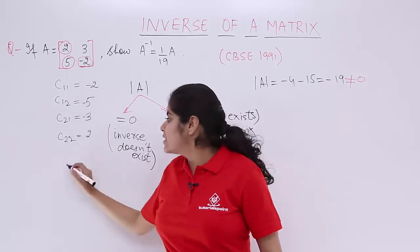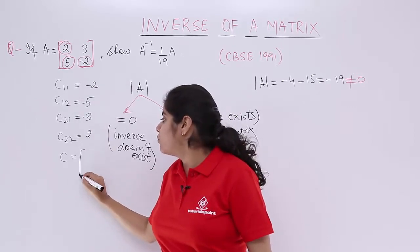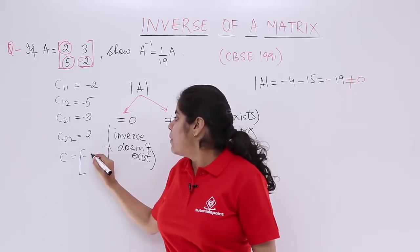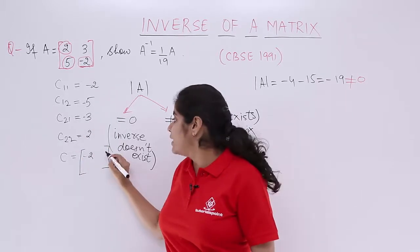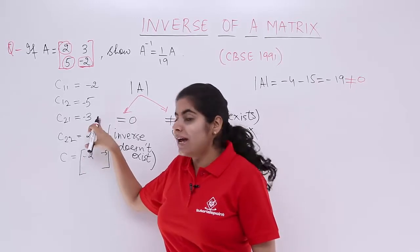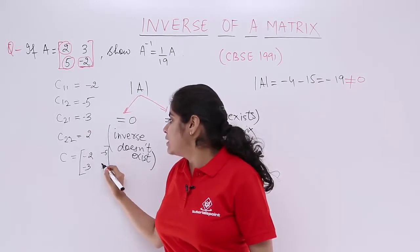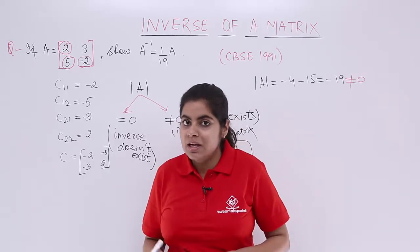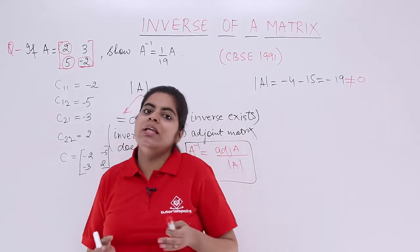So you have all the co-factors listed in the form of a co-factor matrix and that co-factor matrix is minus 2, minus 5, minus 3 and 2. These are the co-factors but co-factor finding is not the end of the story.